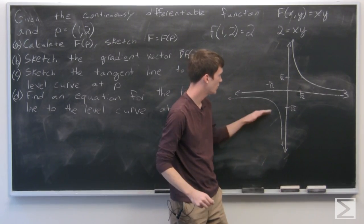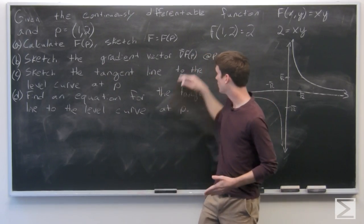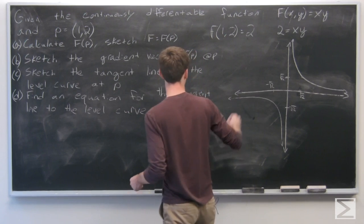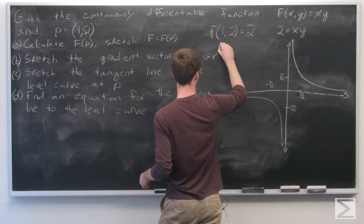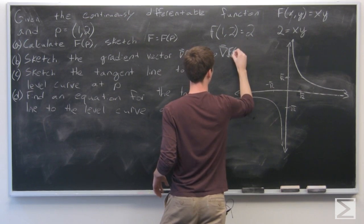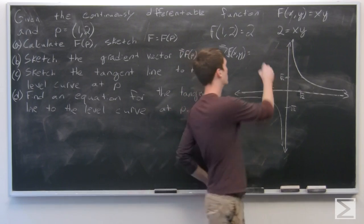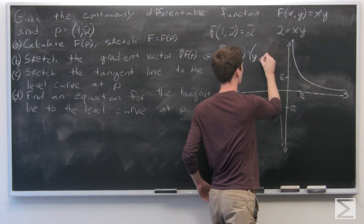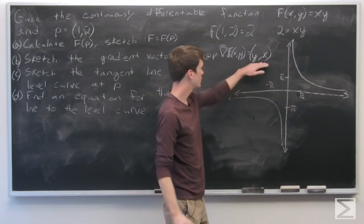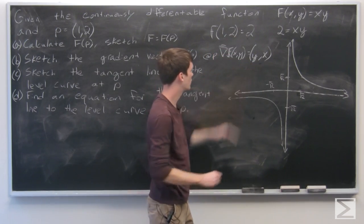Likewise down here. And so we want to sketch the gradient vector, the gradient of f at p. And so the gradient of f is going to be (y, x). So our point p is (1,2), so our gradient is going to be (2,1).